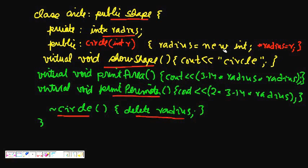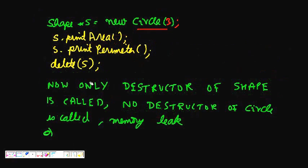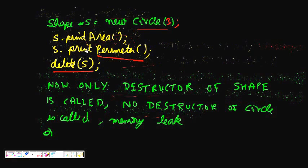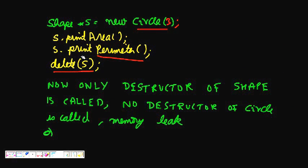This will call the constructor here and it will call radius is equal to new int, star radius is equal to r. And then what happens is s dot printArea, s dot printPerimeter all will be fine and then we will do delete s. Now comes the problem.